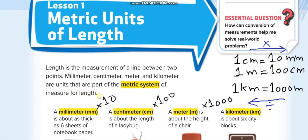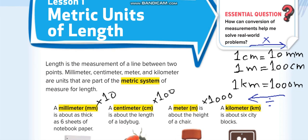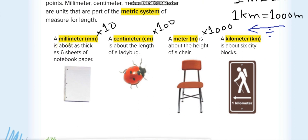The first unit is millimeter — the smallest one. Its short form is mm. It is very small, like the thickness of six sheets of notebook paper joined together — very small, very tiny. If you join 10 millimeters together, like 60 sheets instead of six sheets, it will become one centimeter.